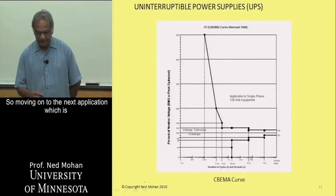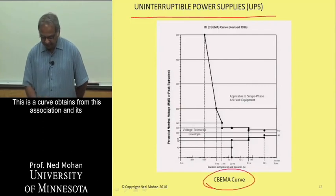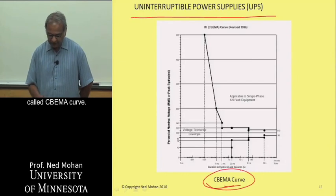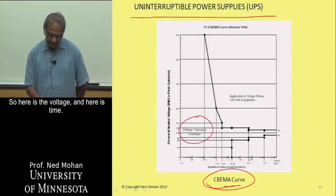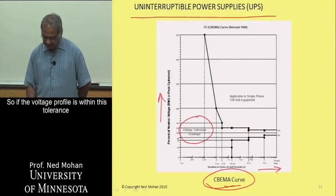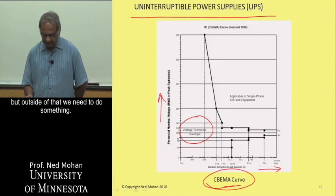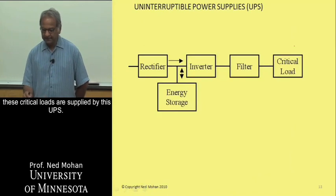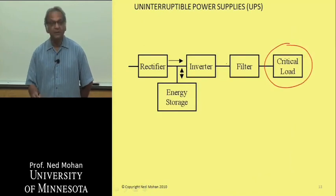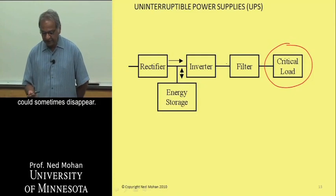So moving on to the next application, which is so-called UPS, uninterruptible power supplies. This is a curve obtained from this association and it's called CBEMA curve. It shows this voltage tolerance level. So here's the voltage and here's time. So if the voltage profile is within this tolerance envelope, then there's no problem. But outside of that, we need to do something. So for critical loads, what is commonly done is that these critical loads are supplied through this UPS, not directly from the utility supply because that could sometimes disappear.